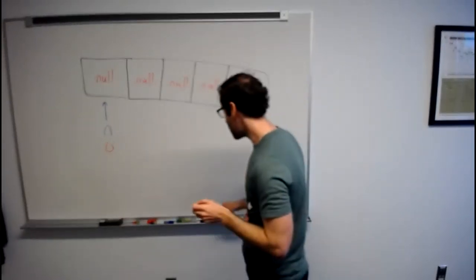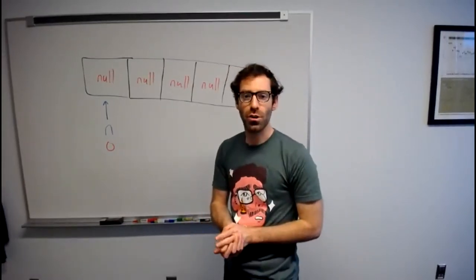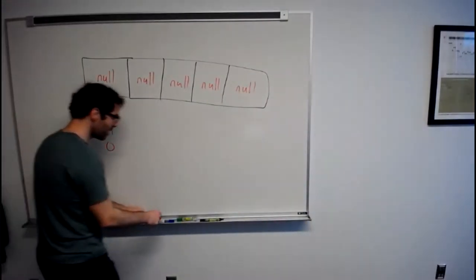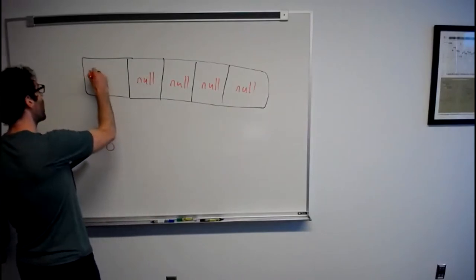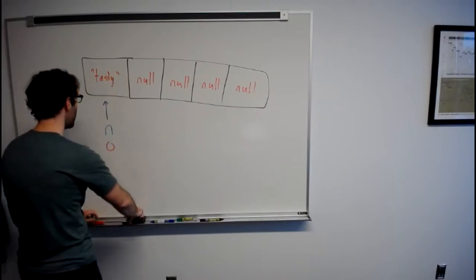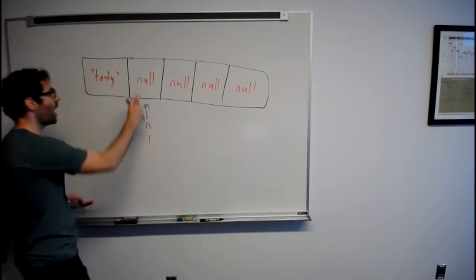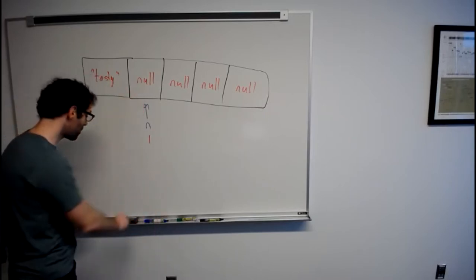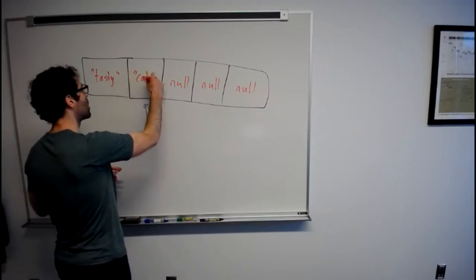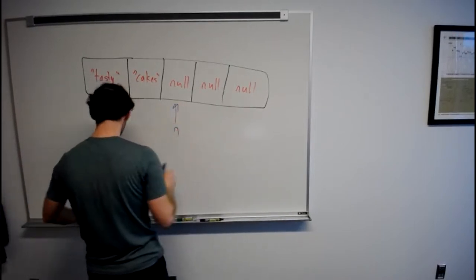We then push the string 'tasty'. Looking at the code for push, it says the item at index n is assigned to the item we're pushing on. So now we have 'tasty' at index 0, and then we add 1 to n — so n is now 1, again referring to the first available spot. When we then push the string 'cakes', we assign it to that index, increment n, and it's now 2.